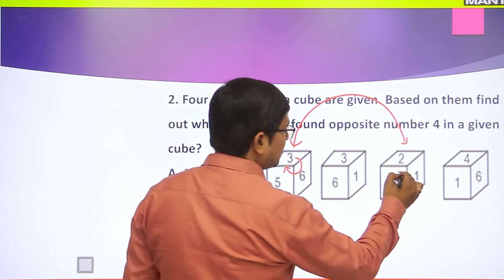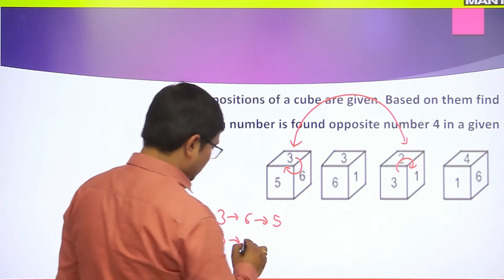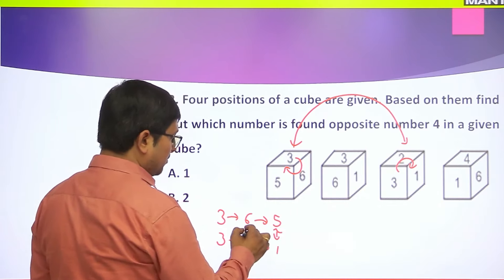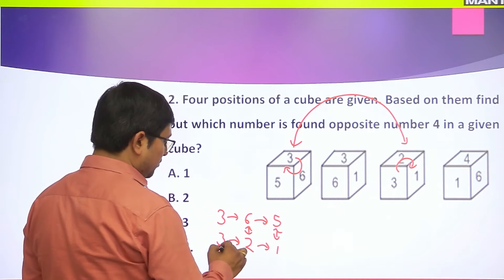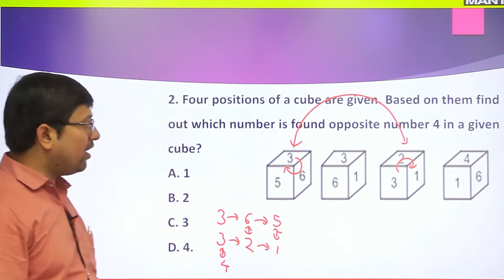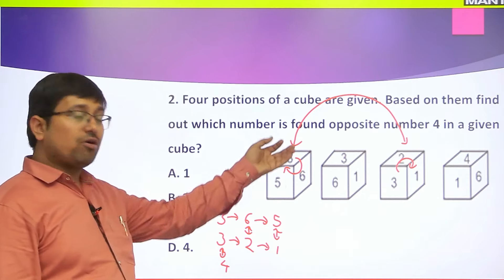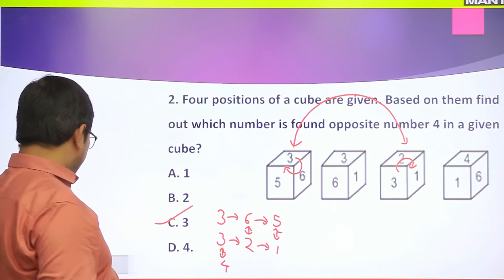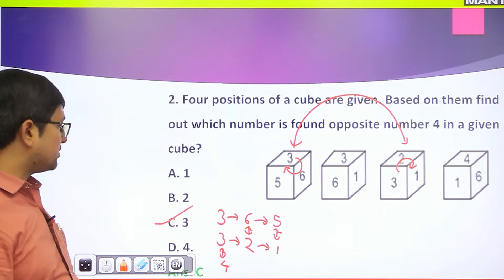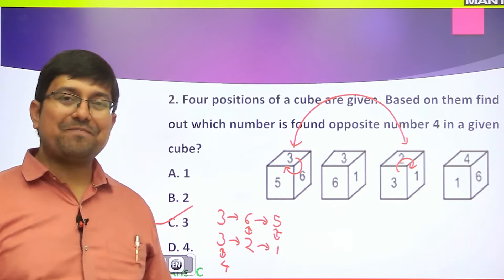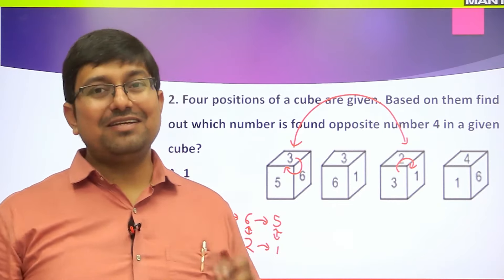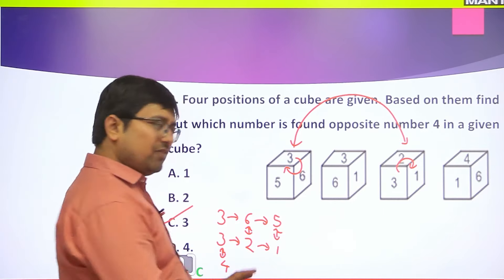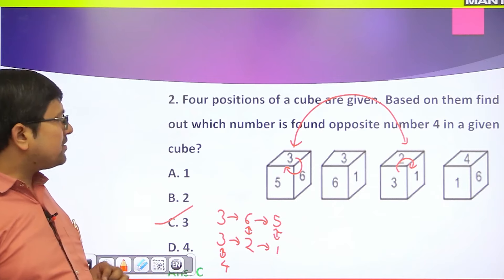So 5 opposite 1, 6 opposite 2, and 3 opposite 4. The question asks which number is opposite to 4 - the answer is 3. Therefore the correct answer is option C, that is 3. That is one method.